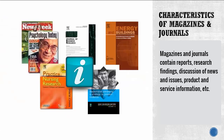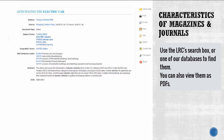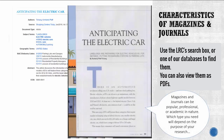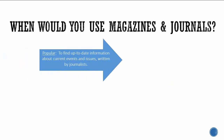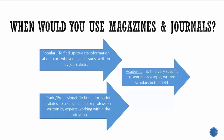What about the characteristics of magazines and journals? Magazines and journals contain reports, research findings, discussion of news and issues, product and service information, etc. Magazines and journals can be popular, professional, or academic in nature, and which type you need will depend on the purpose of your research. Use popular magazines to find up-to-date information on current events written by journalists; trade or professional magazines for information related to a specific field written by experts; and academic journals for very specific research on a topic written by scholars in the field.